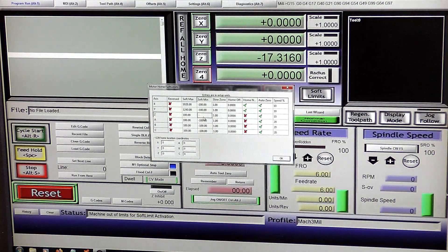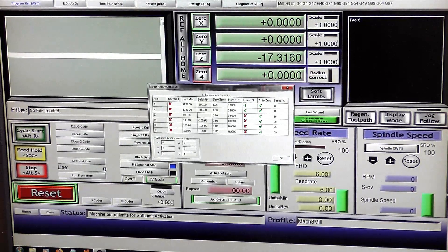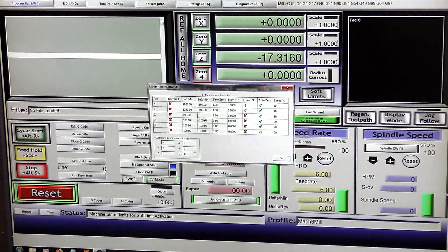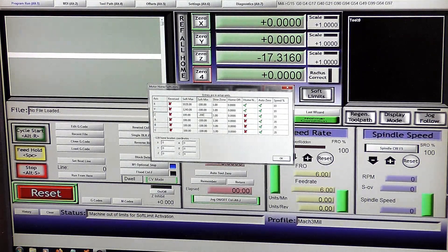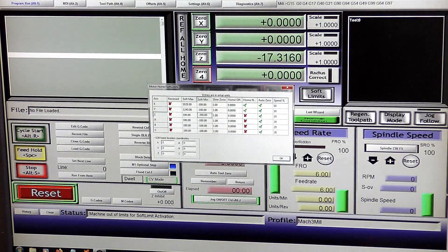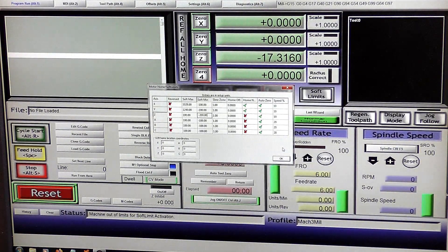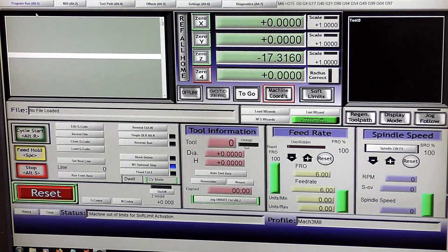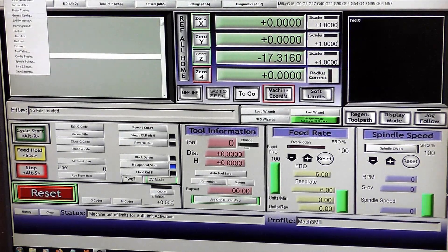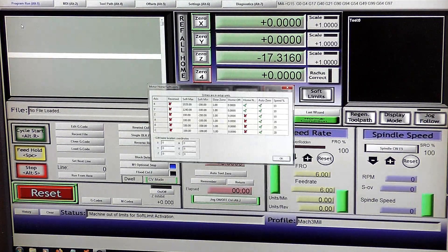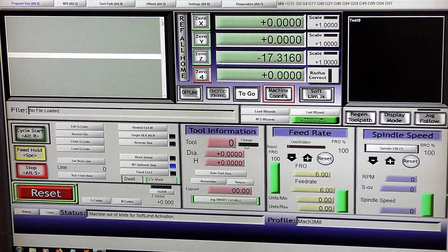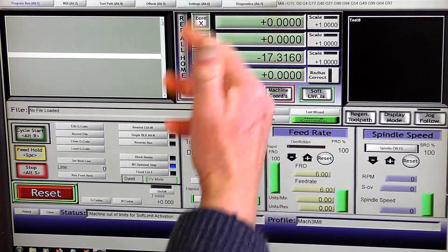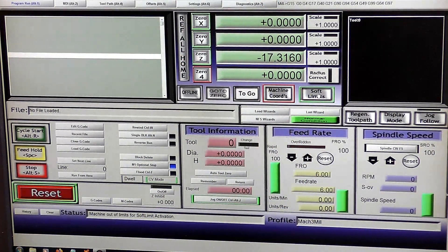And the Z is in the minus direction, so that is 200. And now you can turn the soft limits on.